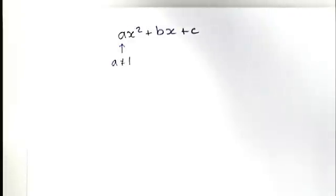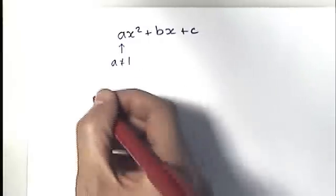I'm going to take you through a few examples of how you can use a reverse grid method to work out your factorisation and figure out what brackets would give you your quadratic expression.